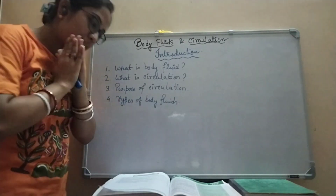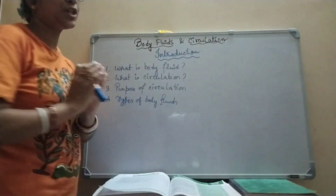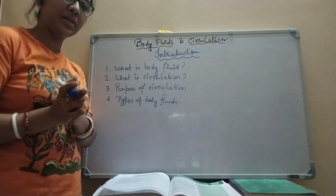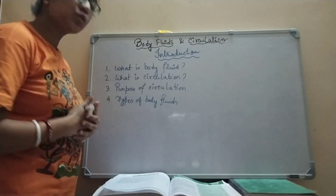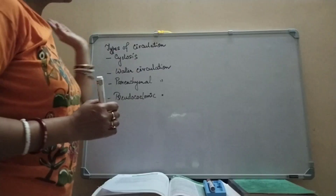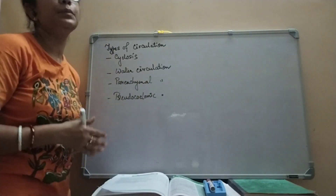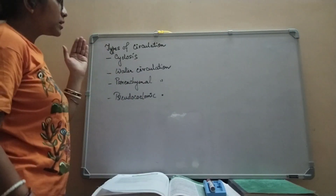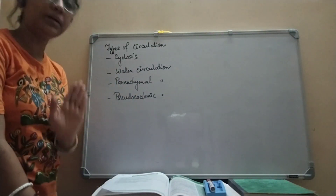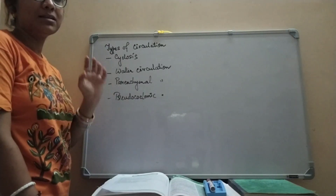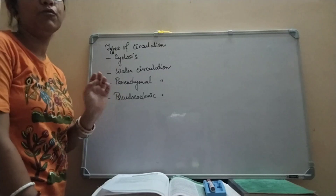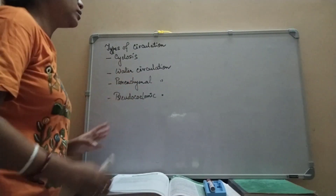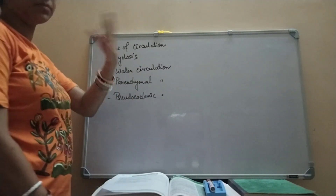What are the different types of circulation? I have categorized them into four different parts. The first one is cyclosis. These are all in the case of invertebrates. In the case of vertebrates, blood is the main medium for circulation and they have a well-developed heart and cardiovascular system — we will discuss this in the next class.